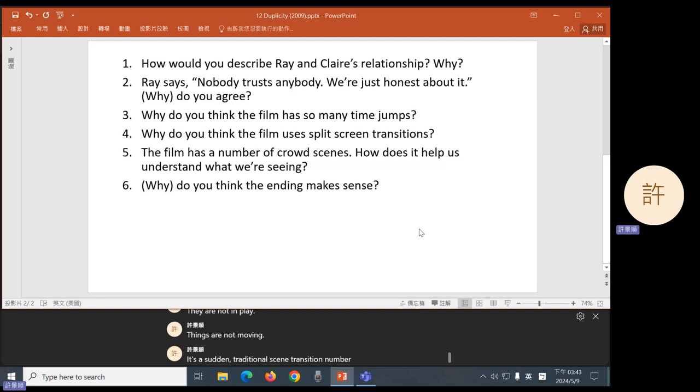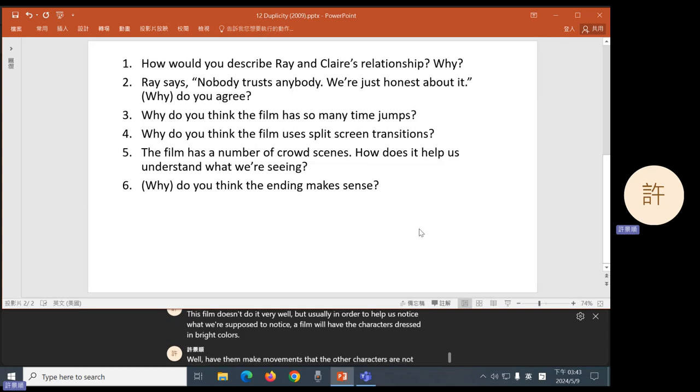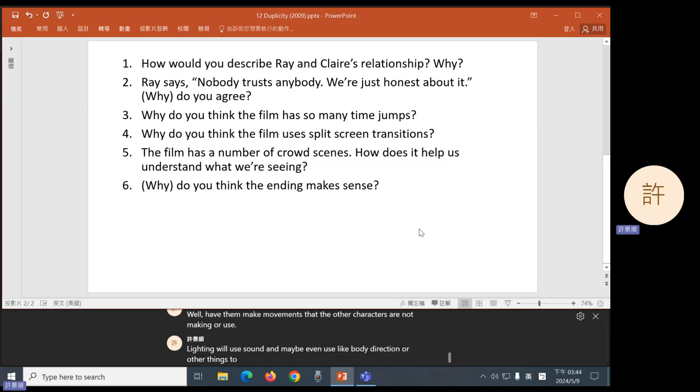Number five, crowd scenes. This film doesn't do it very well, but usually, in order to help us notice what we're supposed to notice, a film will have the characters dress in bright colors, will have them make movements that the other characters are not making, will use lighting, will use sound, and maybe even use body direction or other things to make sure that we notice what we're supposed to notice in a scene full of people.